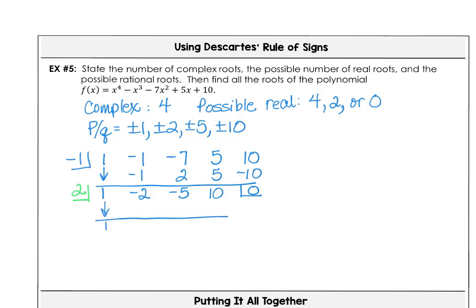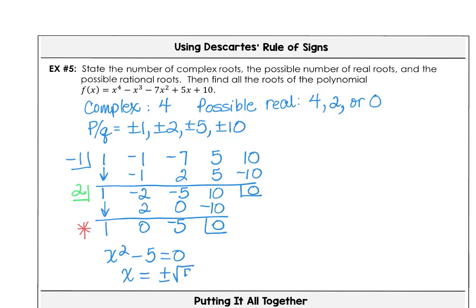Taking the depressed polynomial, we try dividing by 2. Bringing down 1, 2 times 1 is 2, negative 5 times 2 is negative 10. We get another depressed polynomial: x² − 5. From x² − 5 = 0, our zeros are plus and minus √5. So all roots are: negative 1, positive 2, negative √5, and positive √5.